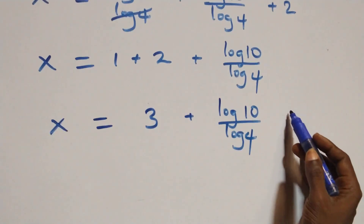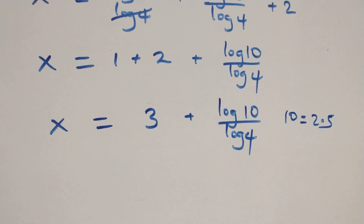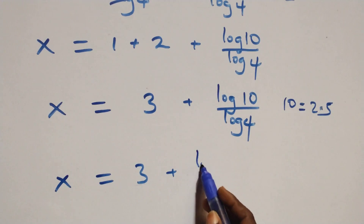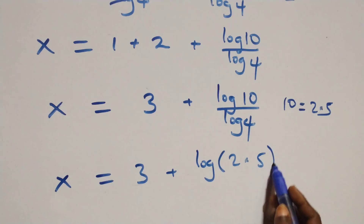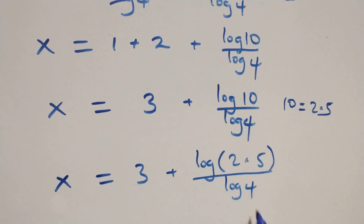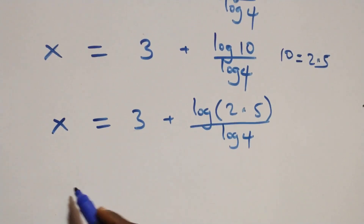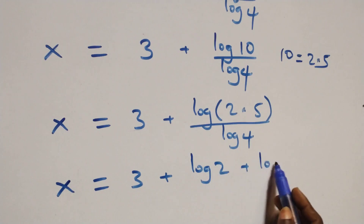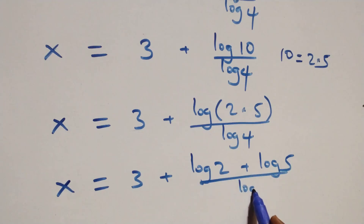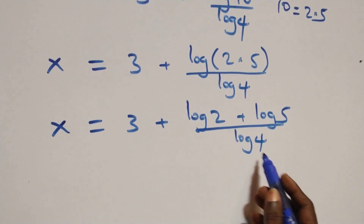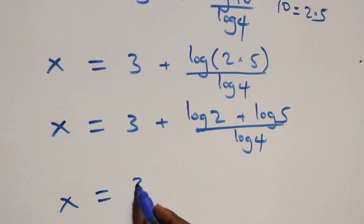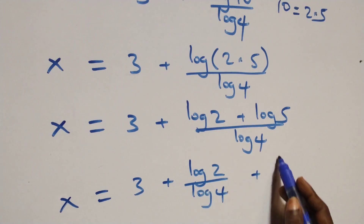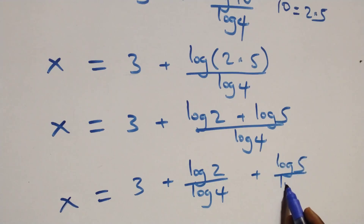Then also here we can write 10 as 2 times 5, which implies we have x equals to 3 plus log(2 times 5) over log 4. Applying the log product rule, we have x equals to 3 plus log 2 plus log 5 over log 4. Separating into two fractions: x equals to 3 plus log 2 over log 4 plus log 5 over log 4.